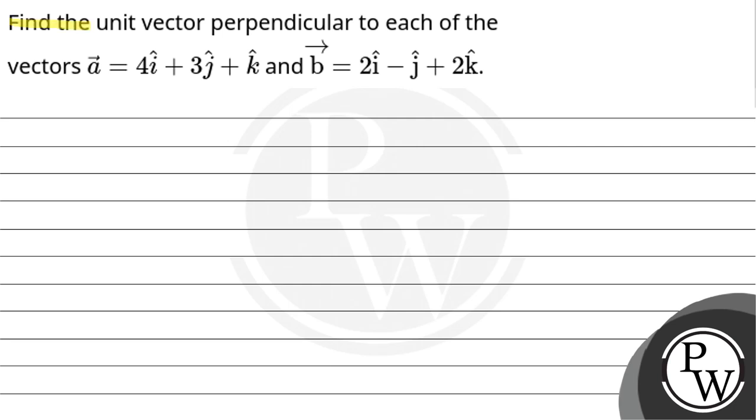Hello, let's read the question. Find the unit vector perpendicular to each of the vectors a vector = 4i + 3j + k and b = 2i - j + 2k.